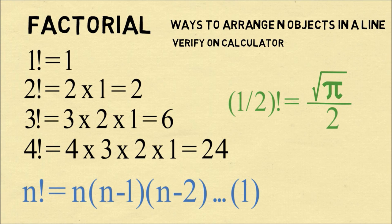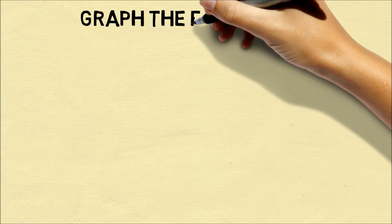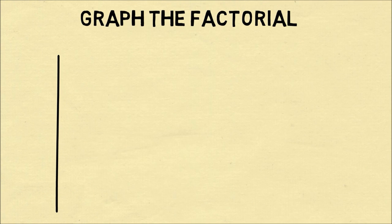So where does this come from? Because it has nothing to do with the definition that we've just explained, which we were all taught in school. So to explain how 1 half factorial is equal to that value, we'll start out by graphing the factorial function.